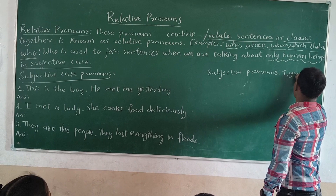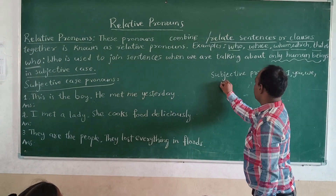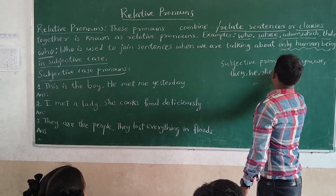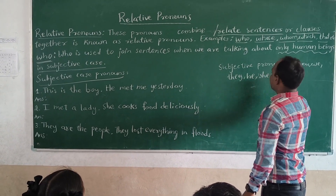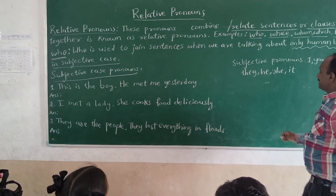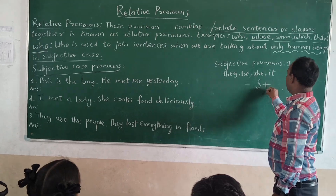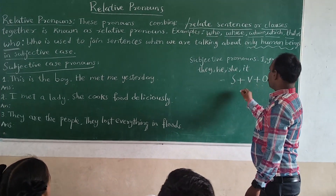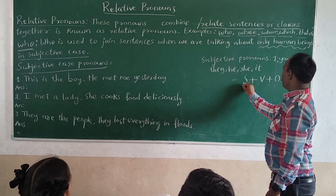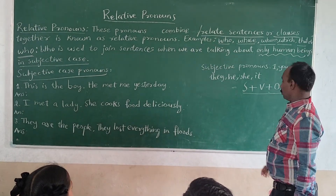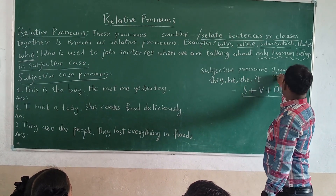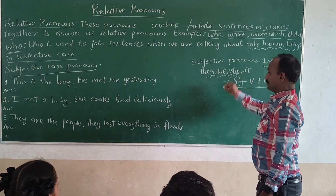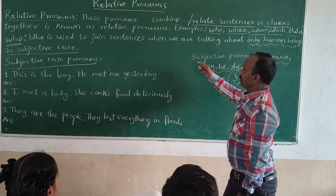You already know subjective pronouns. Subjective pronouns are: I, you, we, they, he, she, it. Every sentence will have a subject, verb, and object. So the structure of a sentence is subject, verb, and object. These pronouns are used in the subject position.